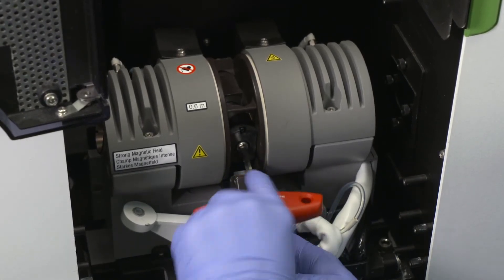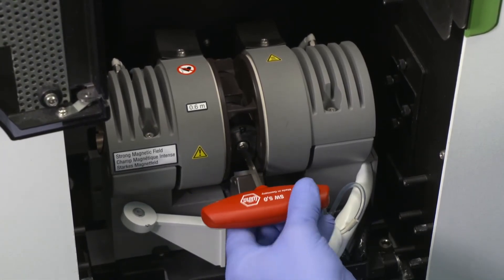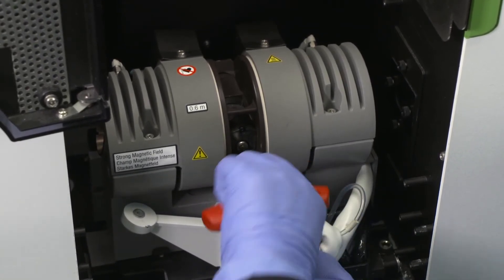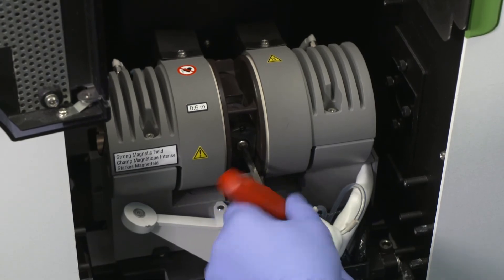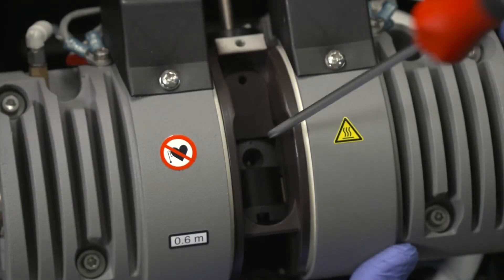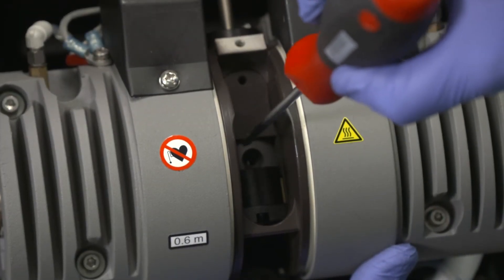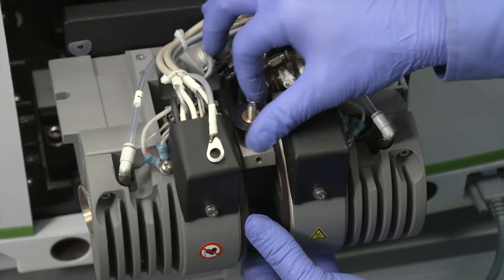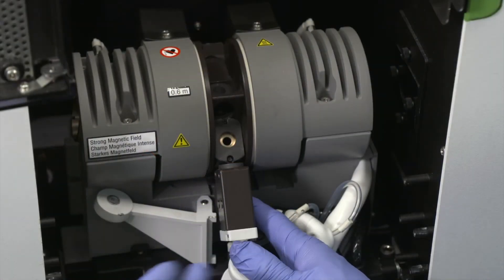Do not use excessive force to push this contact into the housing as it may shatter the contact. If there is substantial resistance, check that the parts are aligned correctly. Screw in the bolt until the contact is flush with the contact housing. Now screw the long bolt out of the threaded cylinder and carefully remove all of the tools.